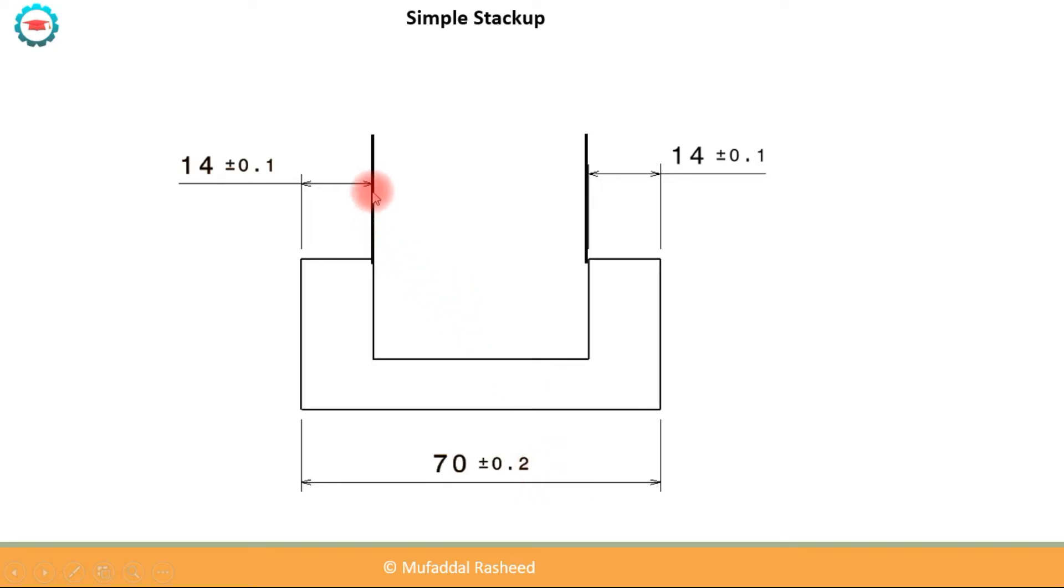Now if you want to find the specifications of this dimension which is shown over here, that is the nominal plus or minus tolerance. If you want to find out the specification of this gap, then what should we be doing?